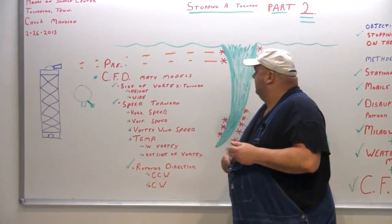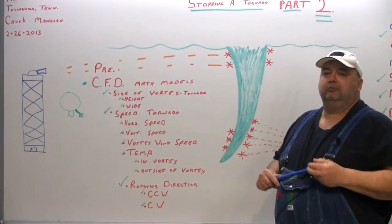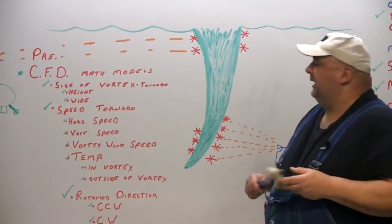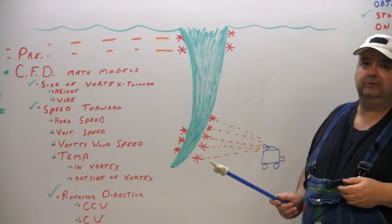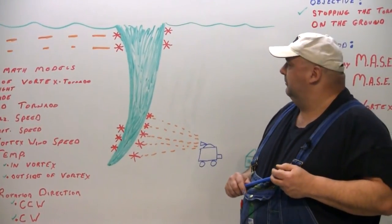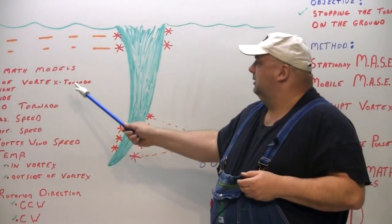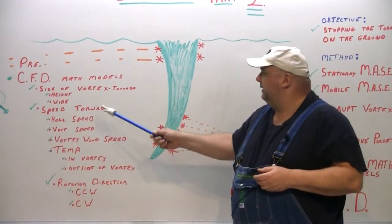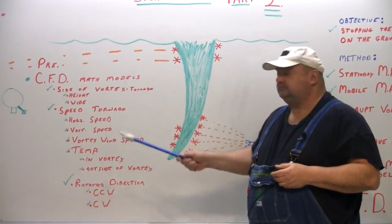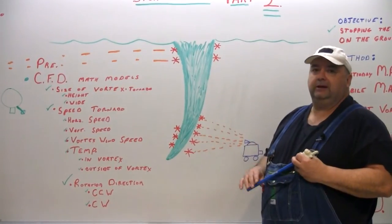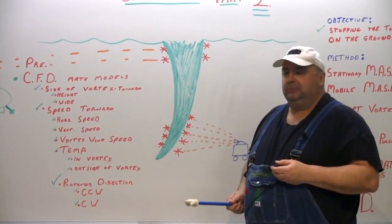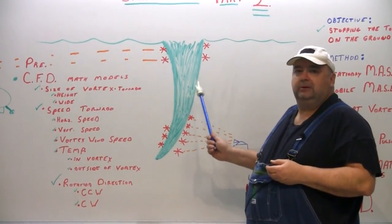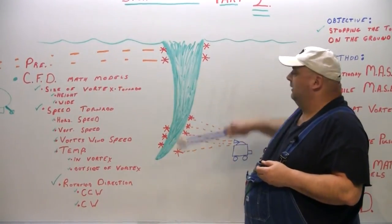Pretty here, we have the math models are already established. Computational fluid dynamics, math models. What will happen, the vortex will touch down, and then there will be a model already in the computer system itself that determines the height, the width, the speed of the tornado, the horizontal speed that's traveling on land, vertical speed as the vortex comes down. Vortex wind speed, what's actually happening, different layers, different levels of the tornado itself.